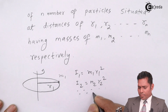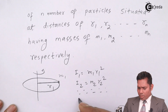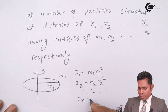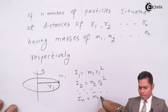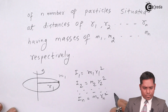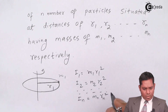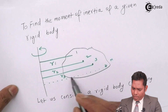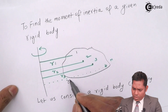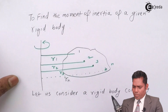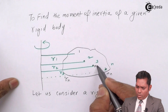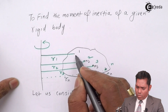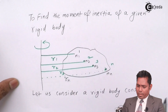Continuing like that, the last particle will have moment of inertia Mn Rn squared — that is for the nth particle. The nth particle has distance Rn and mass Mn; similarly mass M3, M2, M1 and so on.